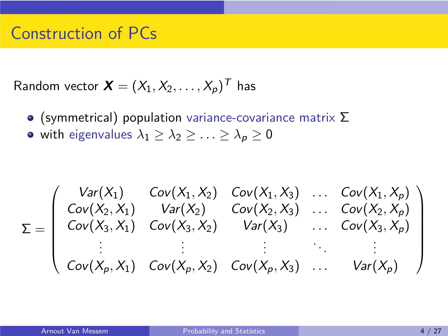We have a random vector x, which is the combination of all vectors x1 to xp, and we know that this has a variance-covariance structure. This structure is defined through the variance-covariance matrix sigma. Recall that sigma is the matrix with all the variances on the diagonal, and the off-diagonal elements are the covariances between two different variables. The variance-covariance matrix is always symmetrical.